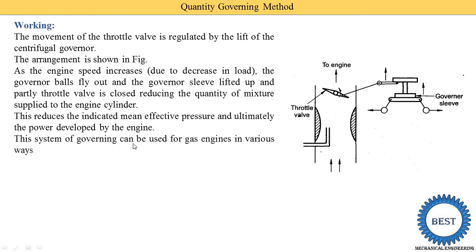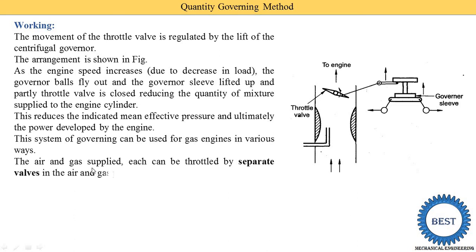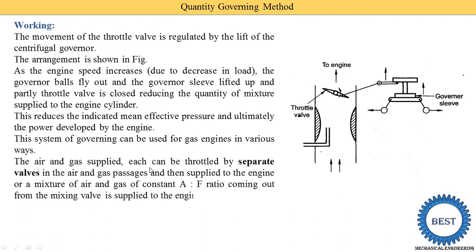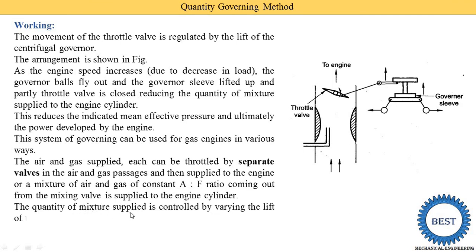This system of governing can be used for a gas engine in various ways. In a gas engine another method is also possible: the air and gas supplied can each be throttled by a separate valve — the air valve is different and the gas valve is different. Alternatively, a mixture of air and gas of constant air-fuel ratio coming out from the mixing valve is supplied to the engine cylinders. The quantity of mixture supplied is controlled by varying the lift of the main inlet valve.